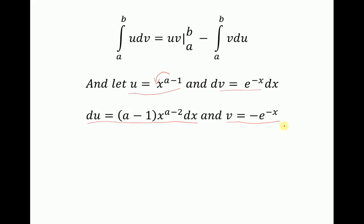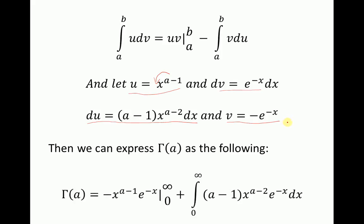Now we can write our expression. We can express the gamma function as follows: this is our u times v from 0 to infinity, where u is x to the power of alpha minus 1 and v is negative e to the power of minus x, evaluated from 0 to infinity. Then minus the integral from 0 to infinity of v du, where v is negative e to the power of minus x. The minus times minus gives a plus, and we have e to the power of minus x times our du term.